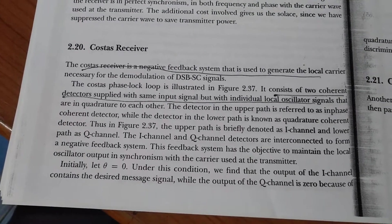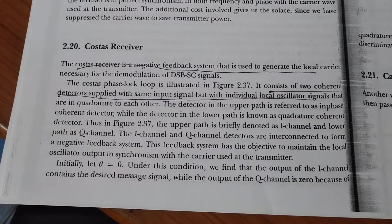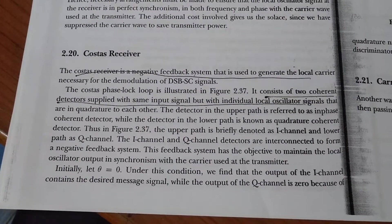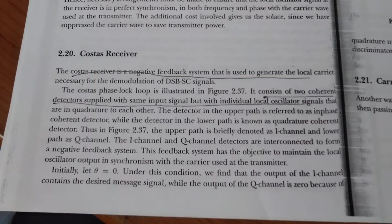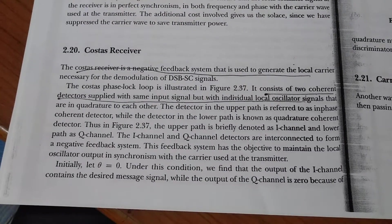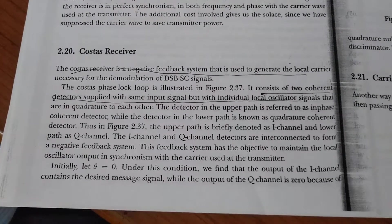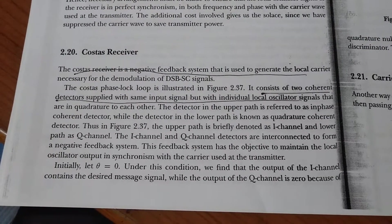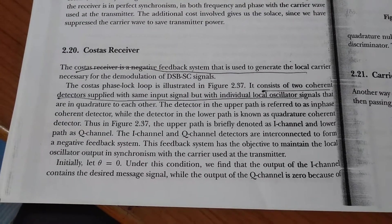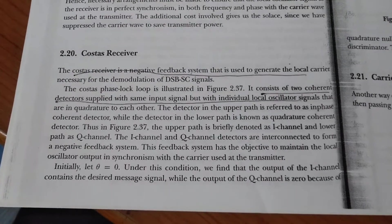The detector in the upper part is referred to as the in-phase (I) coherent detector, while the detector in the lower path is known as the quadrature (Q) coherent detector. Thus, in figure 2.37, the upper path is briefly denoted as the I channel and the lower path as the Q channel.